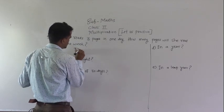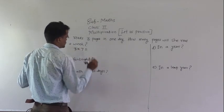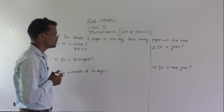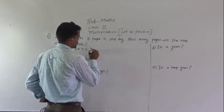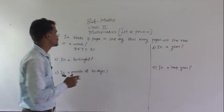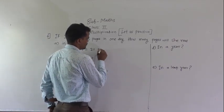3 multiplied by 7. 3 sevens are 21, so in a week she reads 21 pages.